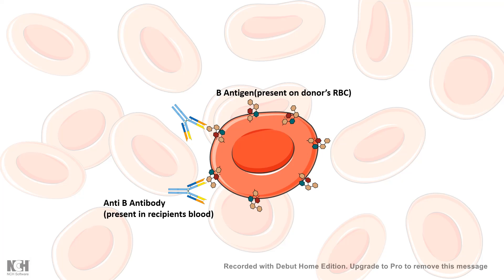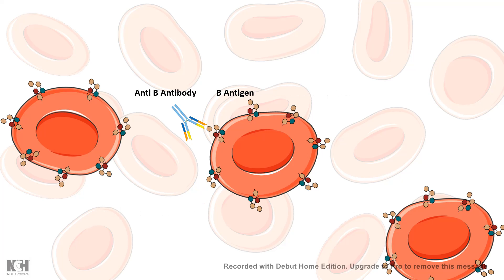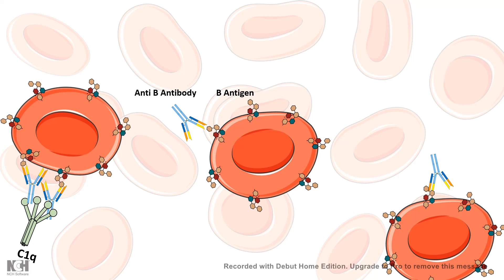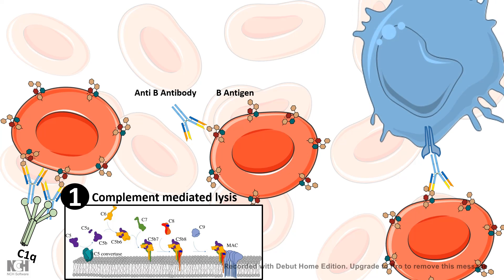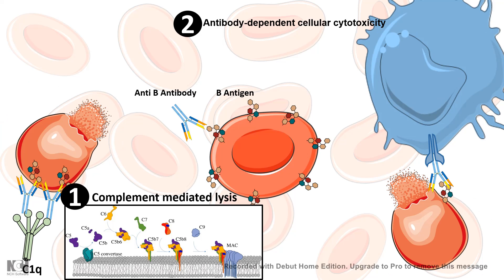The anti-B antibody binds to the B antigen on the donor's RBC, which is quite detrimental. First, these antibodies lead to complement fixation, and complement proteins decorate the RBC surface, creating membrane pores — causing the RBC to be lysed. It is also possible that the antibody-decorated RBC is engulfed by an antigen-presenting cell or macrophage. Either way, there is lysis of the RBC, which is called reactive hemolysis.